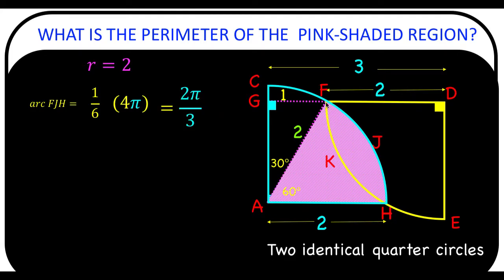This is now the length of arc FH. And since these two quarter circles are identical, then the length of this yellow arc FH must be the same as this 2π over three.